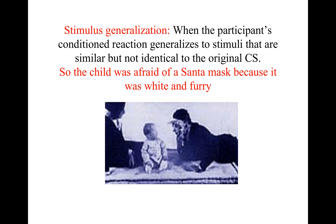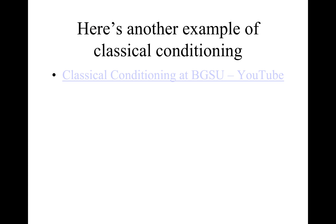There's also stimulus discrimination, which happens when a new stimulus is too different. For instance, if Watson brought a black dog into the room, Little Albert would no longer be afraid because it's too different from the white rat. You can also go to YouTube and type in 'classical conditioning BGSU' for an example of how quickly classical conditioning can occur in humans.